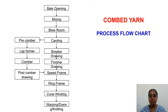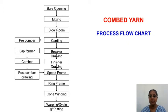For a combed yarn, after carding there is a pre-comber, lap former, comber, and post-comber drawing, which is then fed to the speed frame instead of the breaker and finisher draw frame. The pre-comber and lap former may be combined into a single machine. This is the flow chart for a combed yarn process.